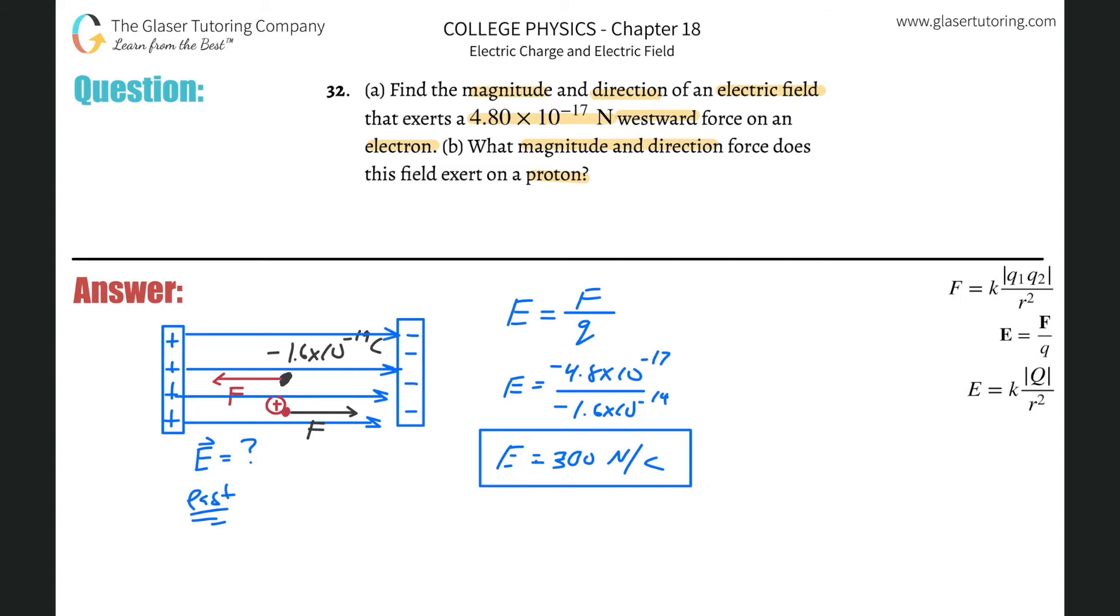And how do we find it? Well, again, we're going to use the same formula. The electric field strength is equal to the force applied to a particular charge divided by the charge value of that charge. So, solving this for force, we realize it's going to be equal to the electric field strength multiplied by the charge. And then we can now just plug in.